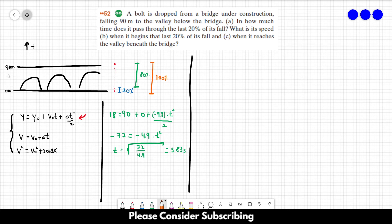So for 100%, we will do the same thing. However, now the final position is 0. The initial position is 90. Minus 4.9 t squared. So t is equal to the square root of 90 over 4.9. And this would be 4.29 seconds.